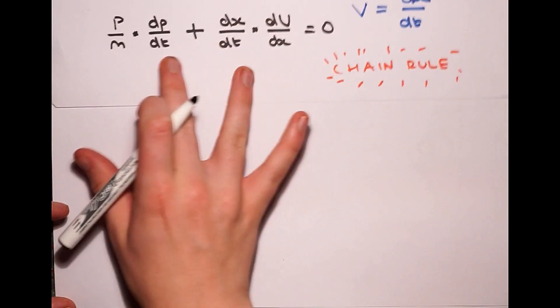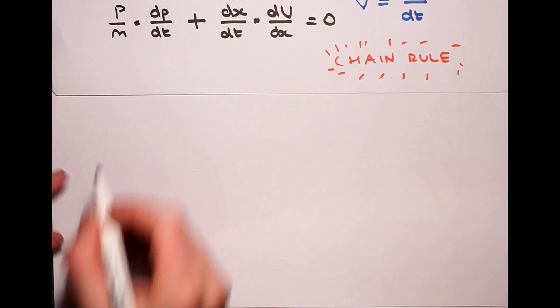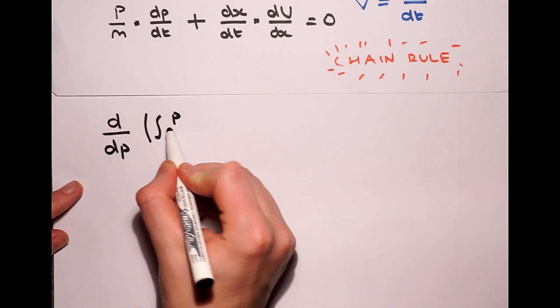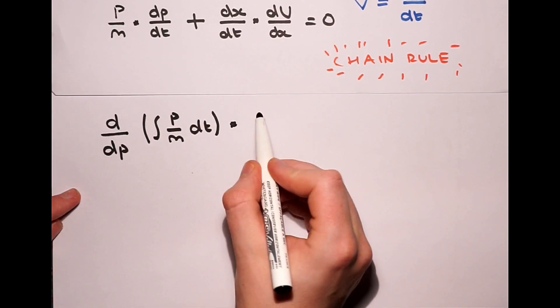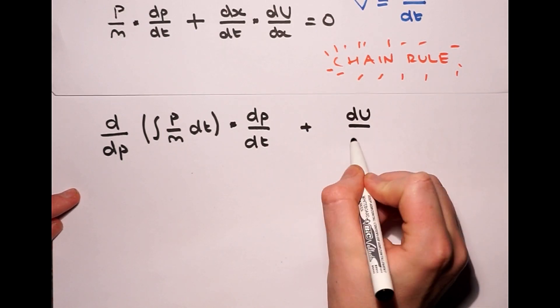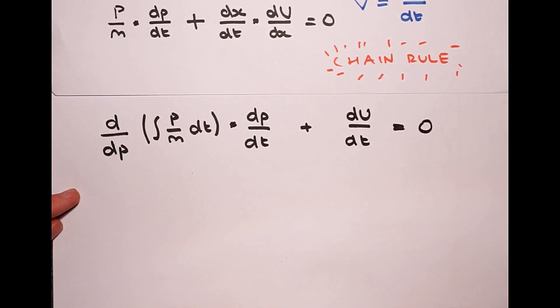Now we have to use a bit of calculus trickery. We write the first term as the derivative of the integral of p over m with respect to p - these two operations cancel each other out - times by dp over dt. And using the chain rule on the second term, we get dU over dt, all equal to zero.